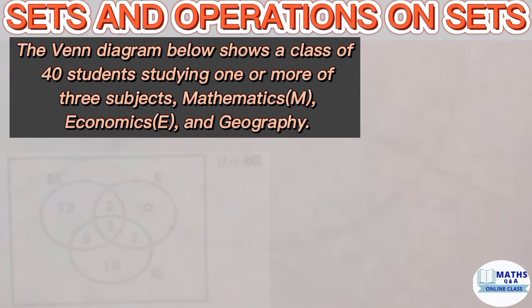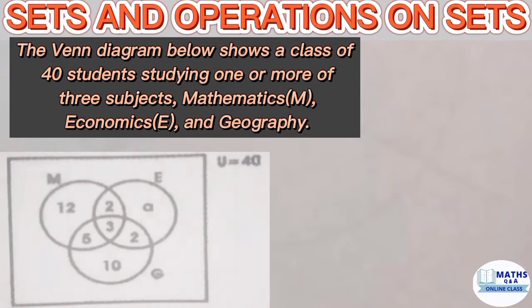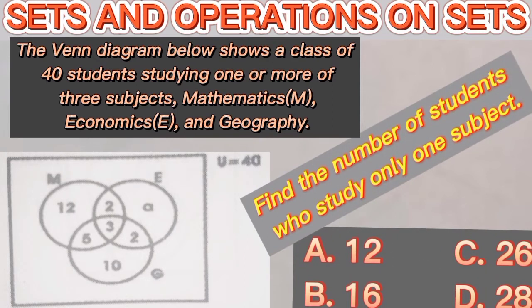The Venn diagram below shows a class of 40 students studying one or more of three subjects: mathematics, economics, and geography. Find the number of students who study only one subject.